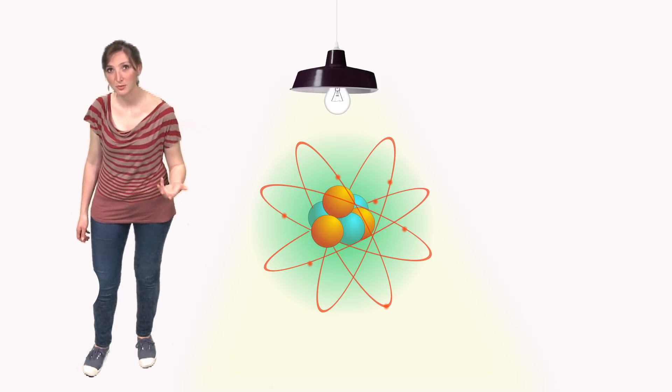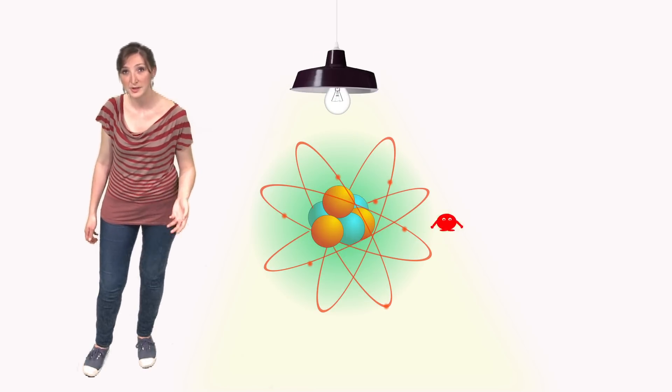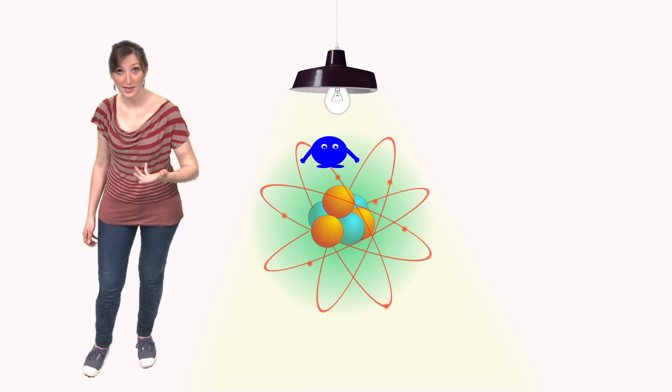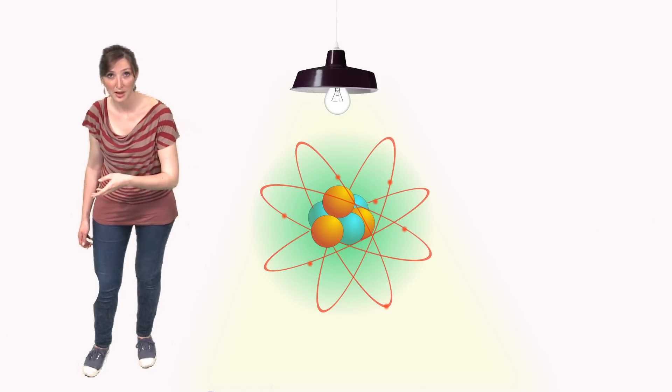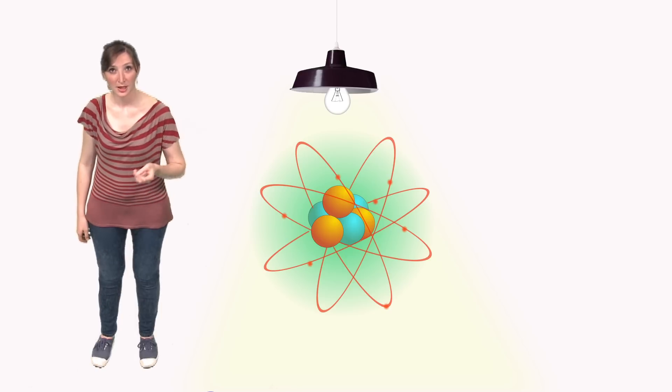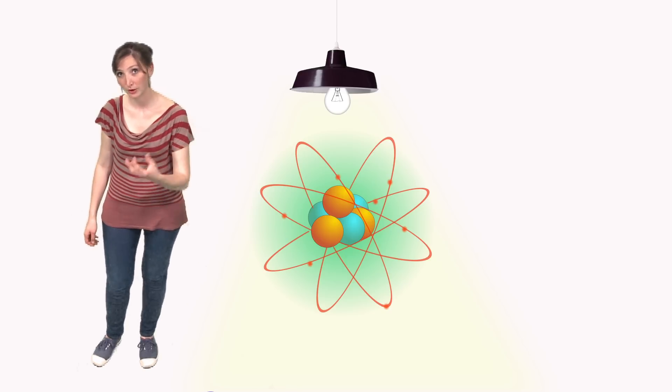The quantum properties of the material also tell us that the color of the re-emitted light depends on the material. Besides, they require that the material cannot absorb or emit a light of whatever color. Thus, the color of the fluorescence is determined by the structure of the material.